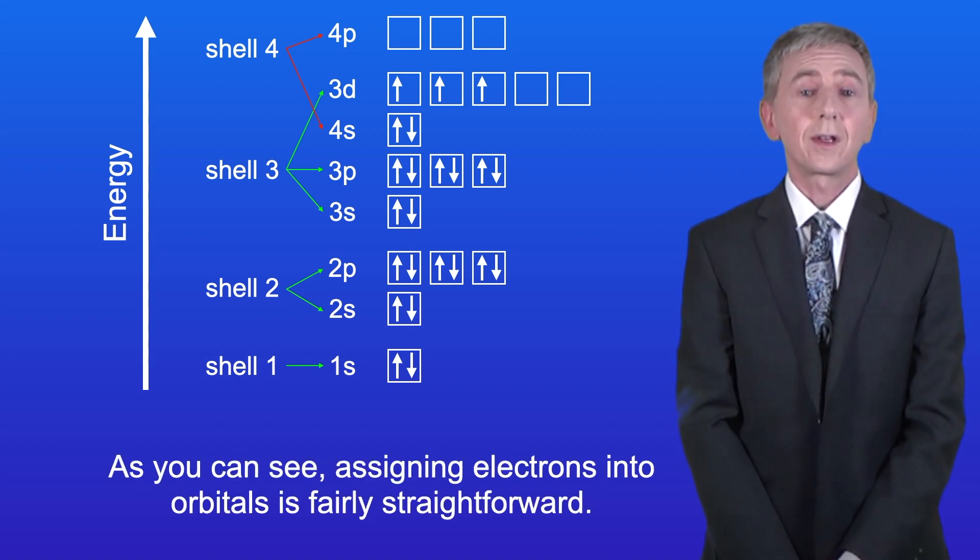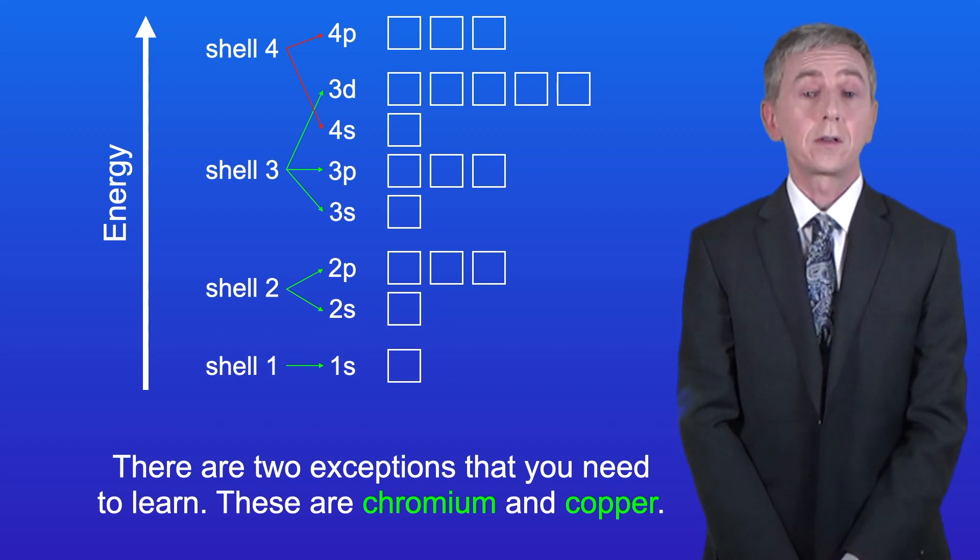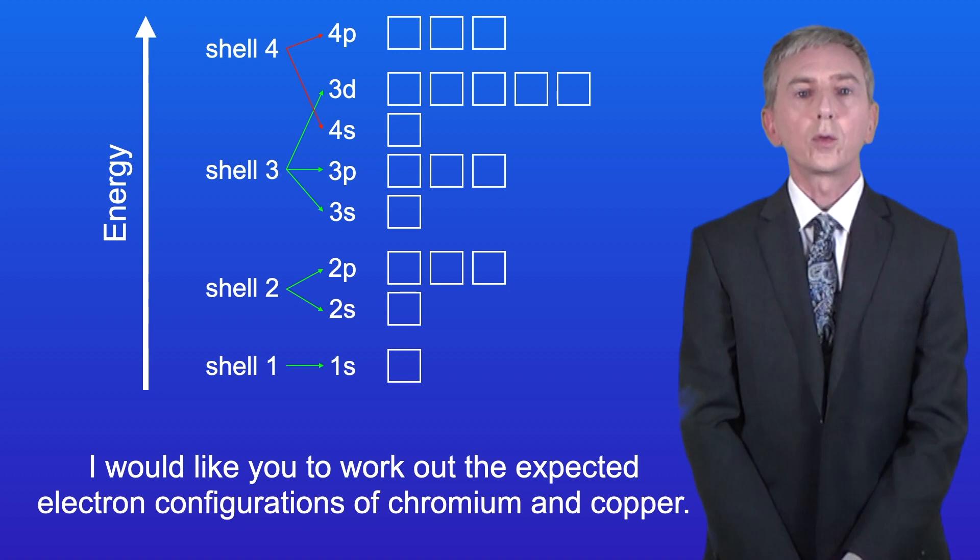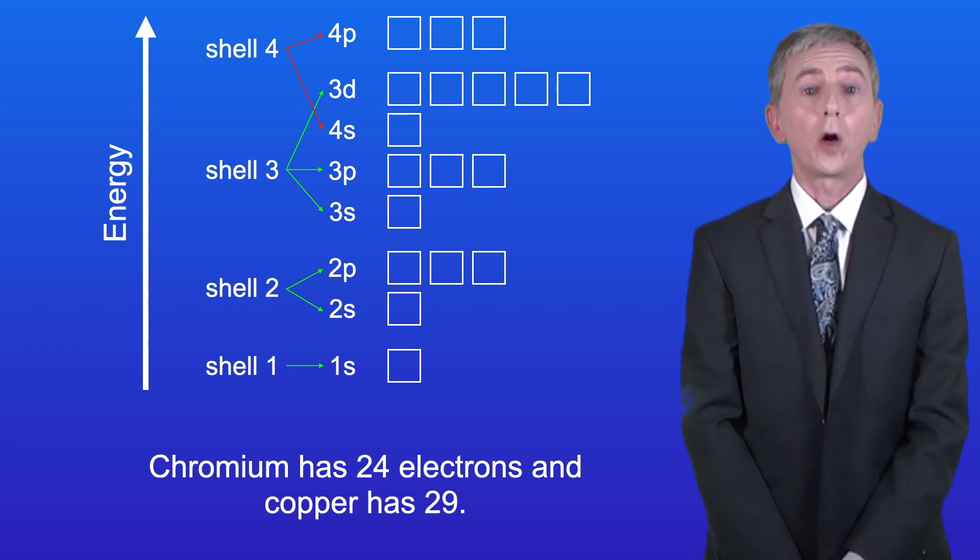Okay, so as you can see, assigning electrons into orbitals is fairly straightforward, but there are two exceptions that you need to learn. These are chromium and copper. I'd like you to work out the expected electron configurations of chromium and copper. Chromium has 24 electrons, and copper has 29. So pause the video now and work this out.